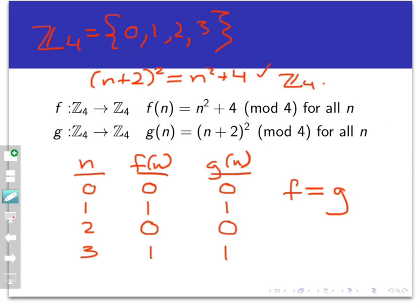So functions that involve integer congruence are really nice because we can fully specify the function just in a really short finite table, and makes it very easy to check if those two functions are equal to each other or not. Thanks for watching!